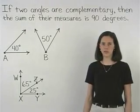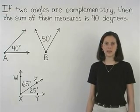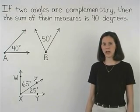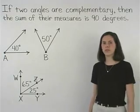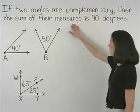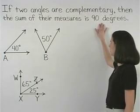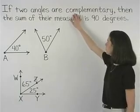Note that the definition of complementary angles can also be stated the other way around. If the sum of the measures of two angles is 90 degrees, then the angles are complementary.